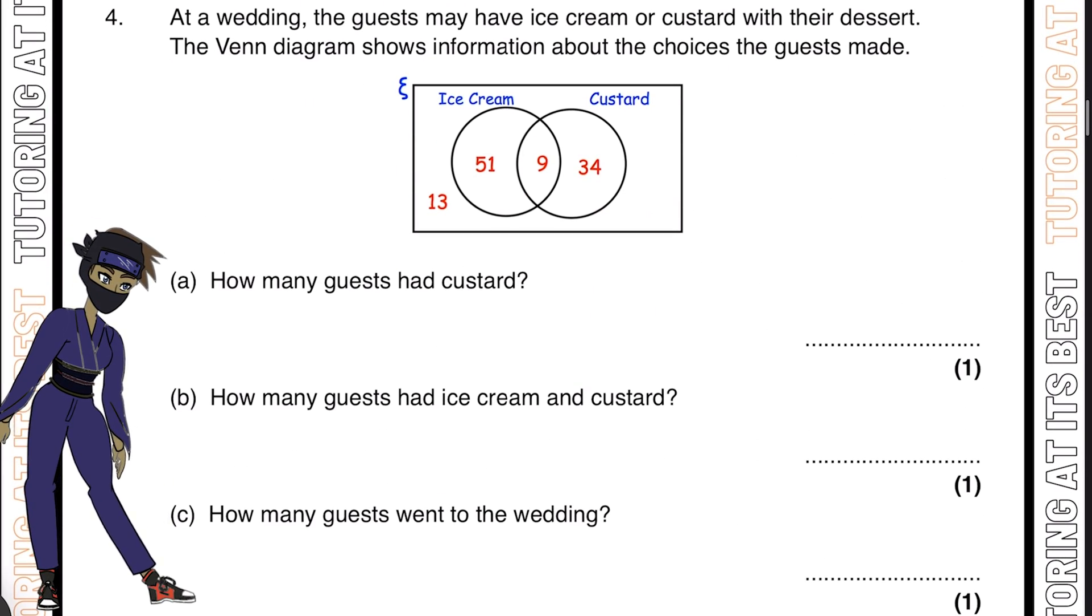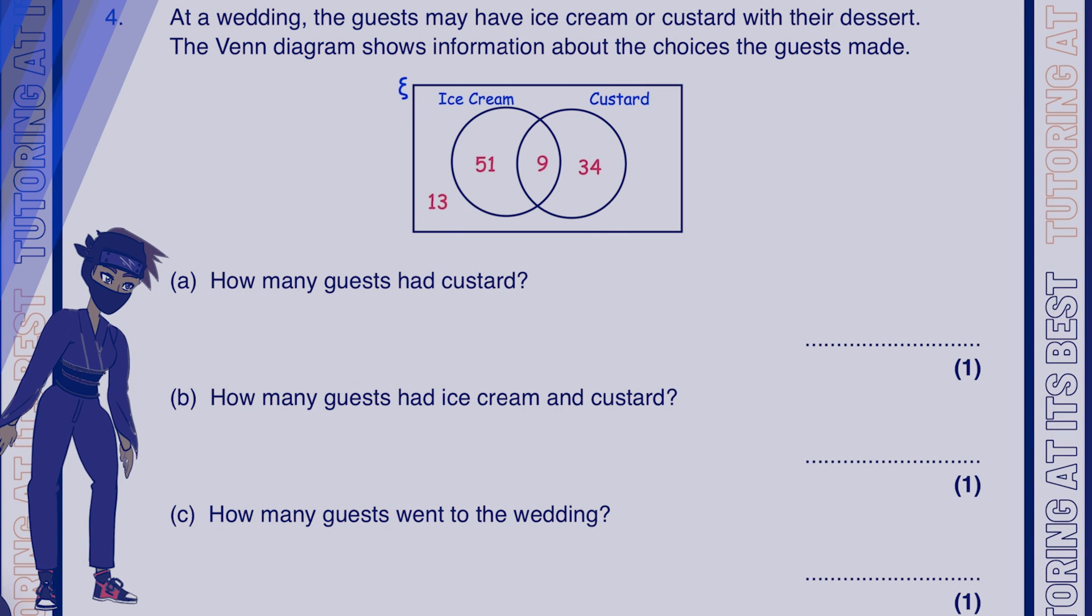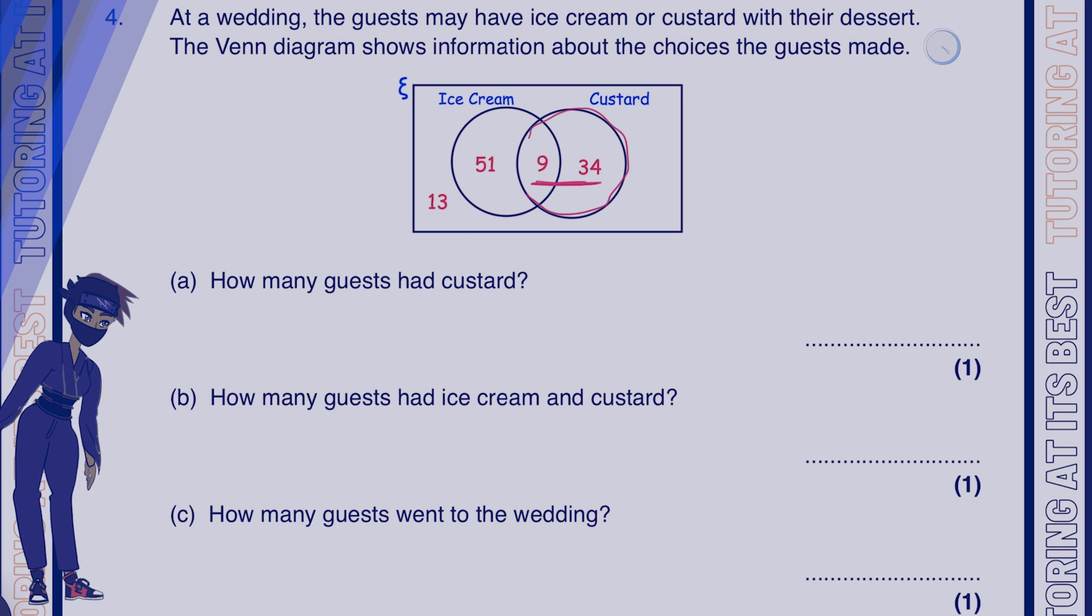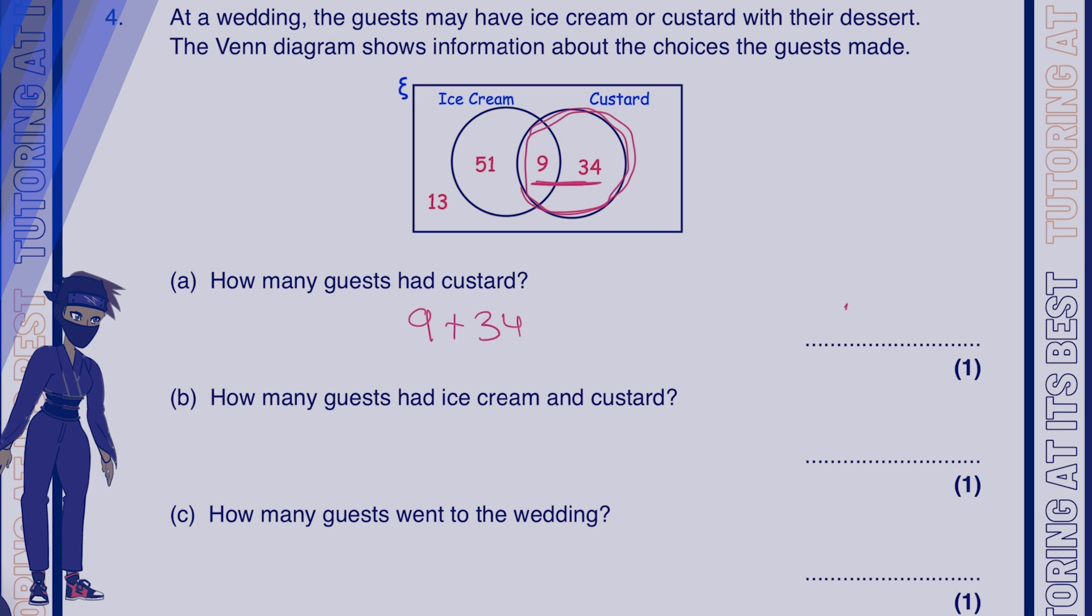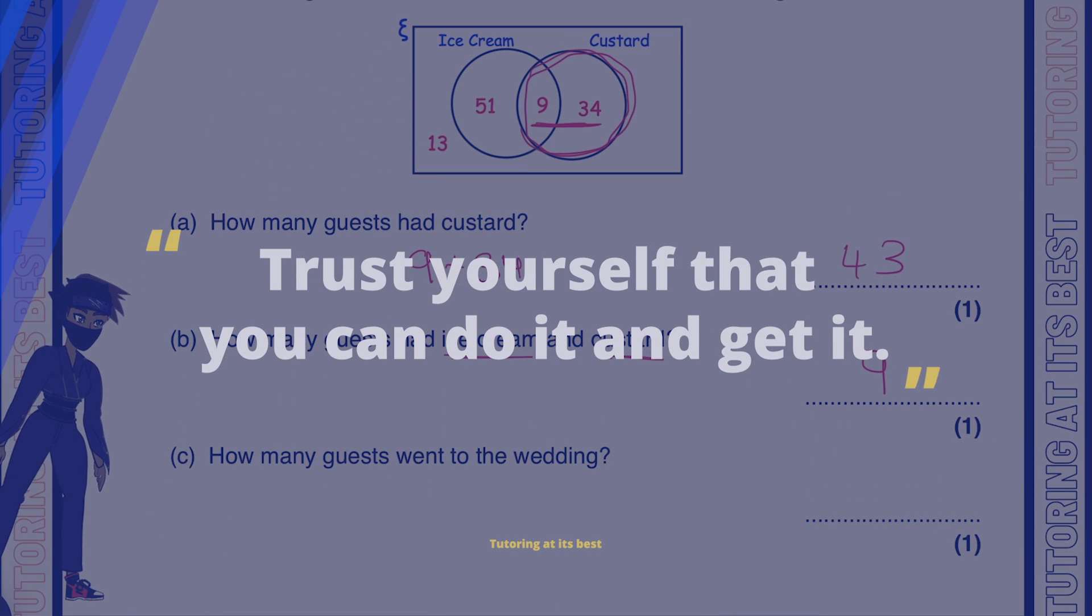Question 4: At a wedding, guests may have ice cream or custard with their dessert. How many guests had custard? Let's add these two numbers here, that's 9 plus 34, which gives us 43. How many guests had ice cream and custard? That's the intersection, which would be 9. How many guests went to the wedding? You might need to calculate the sum of all the numbers here, which gives me 107.